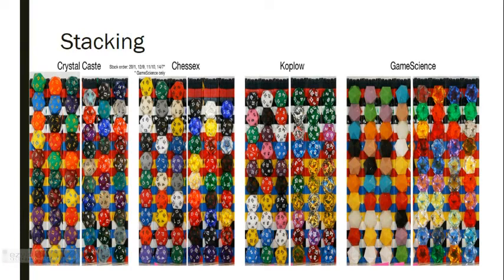As you can see, Crystal Cast, their 20s and 1s are very wide, much wider than their 12s and 9s and their 11s and 10s. And then further, their opaque die, their 20s and 1s are much less wide than their 12s and 9s and their 11s and 10s. So if you compare every one of these sets of dice, Game Science does the best at coming out with pretty even sides except for the 14 and 7 due to the flashing process. They stack up better than every other die in the stacking category.